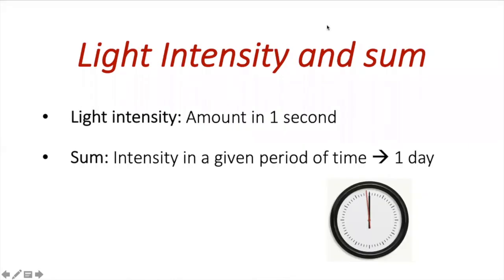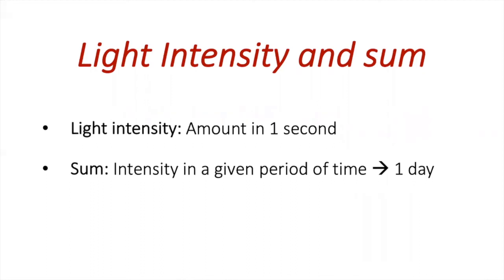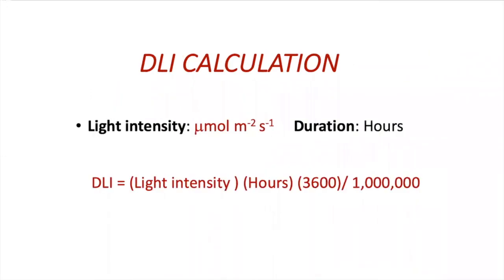Now that you have PPFD units, let's understand how plants are using light. When measuring light, we can speak about light intensity or dose of light. Light intensity is the amount of light per second, while dose of light is intensity over a period of time. To understand lighting for plants, we usually want to know how much light the plant is getting per day — we call this DLI, or daily light integral. To calculate DLI, you need light intensity in PPFD, hours of light (also called photoperiod), and apply the complete formula. This is all you need to get the DLI your plant is receiving.